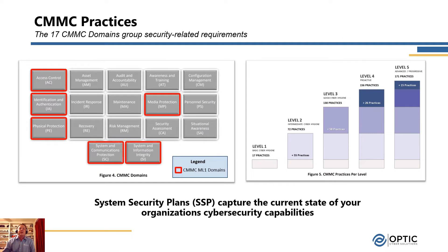Let's talk about what it means to be maturity level one and three. As you can see here from figure four of the CMMC model, there are 17 cybersecurity domains within CMMC, and only six of those domains are required at level one. From figure five of the CMMC model, at level one there are 17 practices — 17 discrete practices that have to be performed. At level one, we're just performing them. When we get to level three, all 17 domains come into effect and there are 130 practices that have to be implemented. That's why level two was important — it helps set prioritization, because it is a rather large step between level one and three with 130 practices.